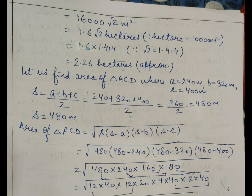After solving, we get 16,000 root 2 meter square. We can write this as 1.6 root 2 hectares, where 1 hectare equals 10,000 meter square. In place of root 2 we can write 1.414, so 1.6 into 1.414 gives approximately 2.26 hectares.